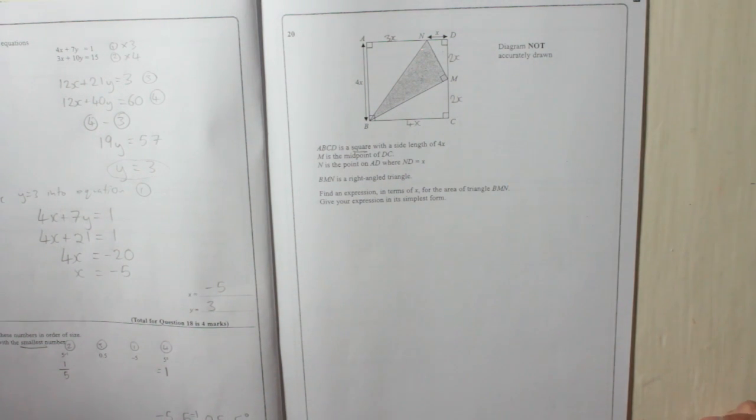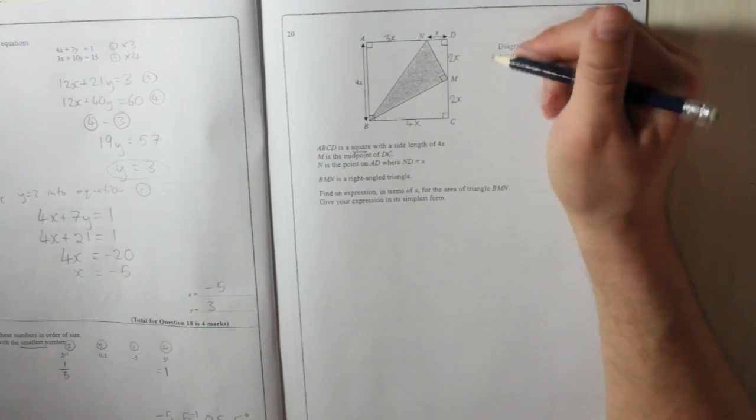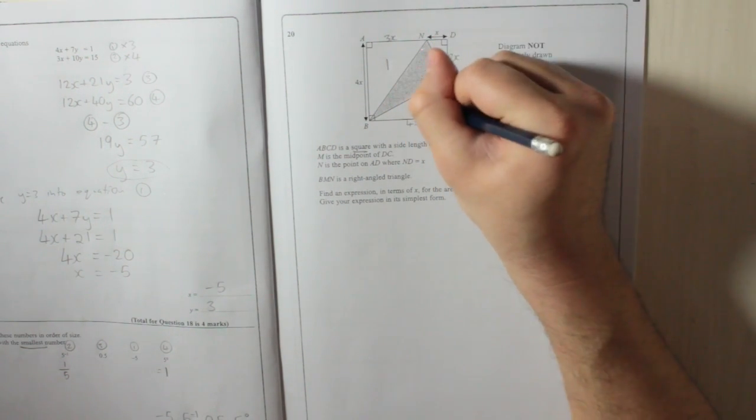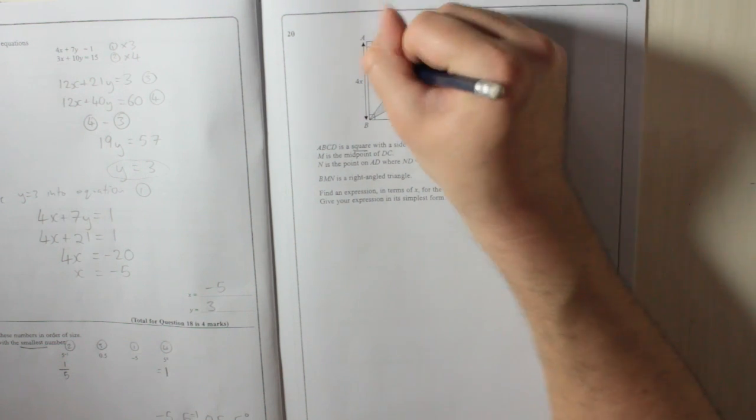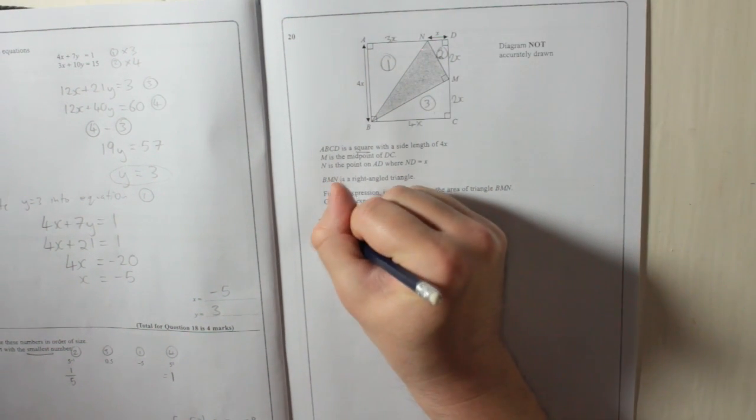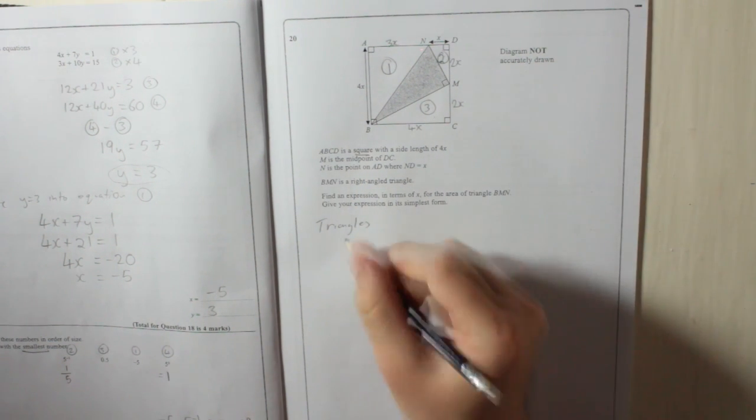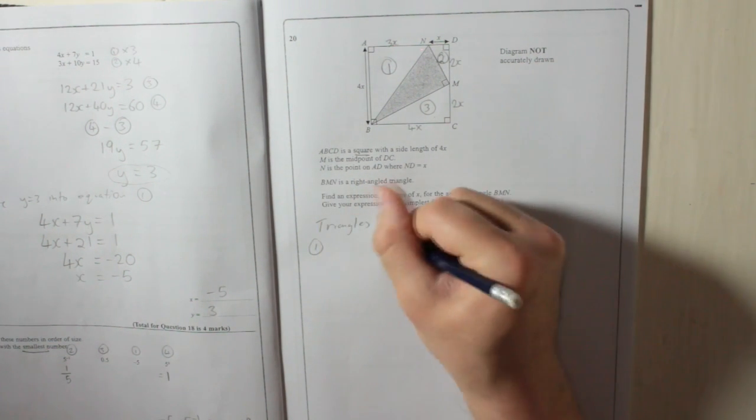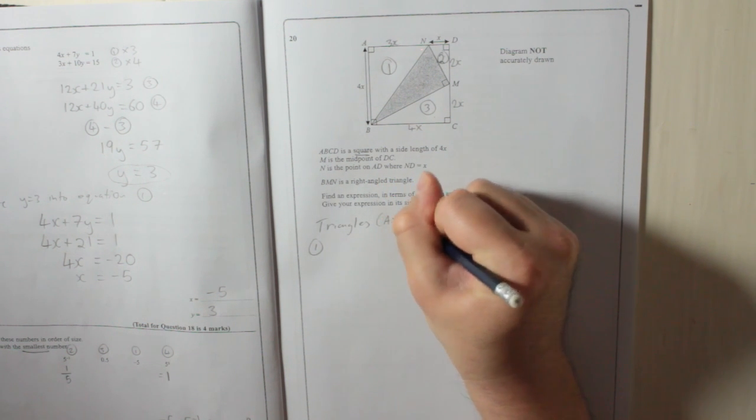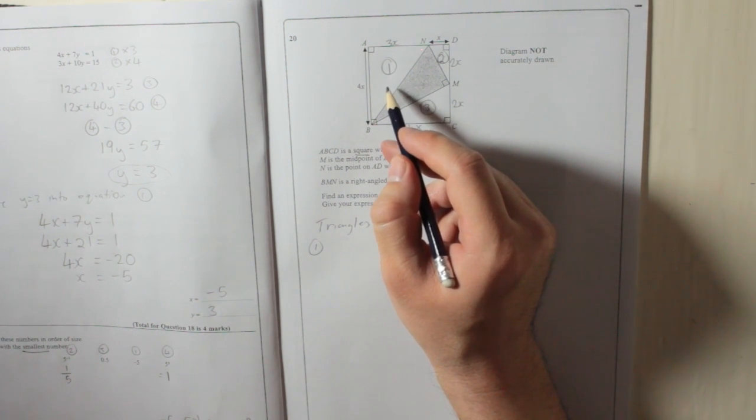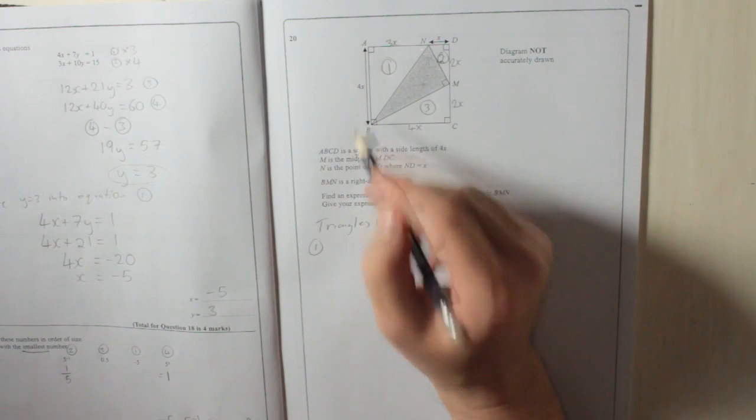So, I'll number the triangles. We've got triangle 1, 2, and 3. So triangles. These are areas, remember. Triangles, I'll put area in brackets. So number 1. Remember, a triangle is base times height divided by 2. So 3X times 4X divided by 2.